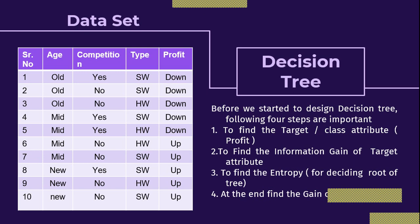Before we start solving the decision tree, the following four steps are very important. The first step is to find the target or class attribute. From this data set, I want to do the prediction of whether the profit is up or down. So whenever you receive a data set, first find out which attribute is the target attribute.